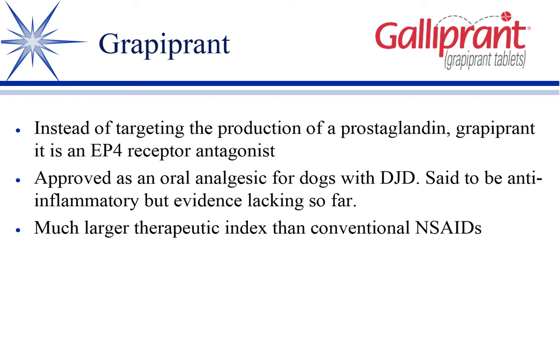The second homeostatic role is maintaining renal blood flow. Prostaglandins are not necessary for normal renal blood flow, but if GFR starts to drop — say the patient is dehydrated or hypovolemic — the kidney produces local prostaglandins including prostaglandin E to cause vasodilation and improve renal blood flow. If you block that, you get ischemic injury to the kidney. Both of those are toxicities we see with NSAIDs.